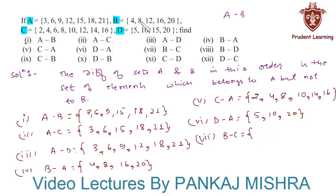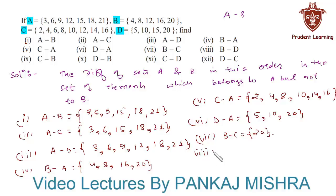Here we can see that except 20, all the elements of set B are in C. Therefore the set B minus C will contain only 20.